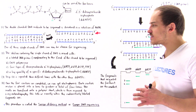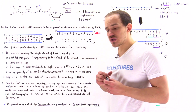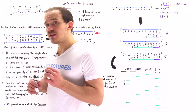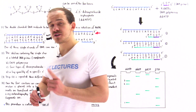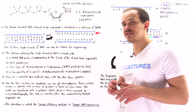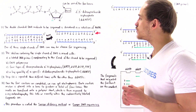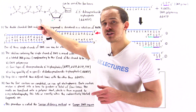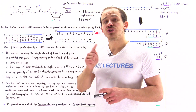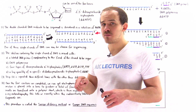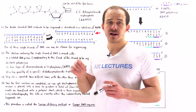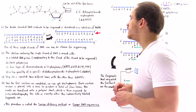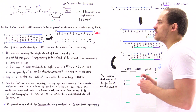Before we discuss the steps of this process, let's discuss an important molecule used in it. The molecule is called 2'3' dideoxynucleoside triphosphate, or simply ddNTP.